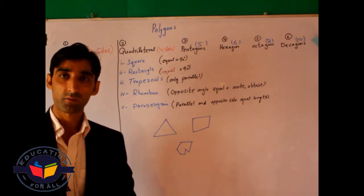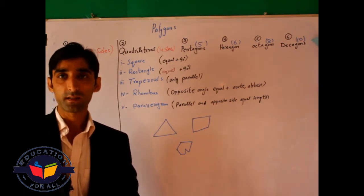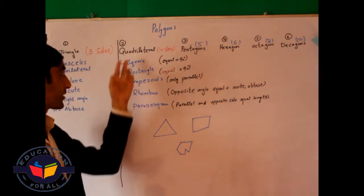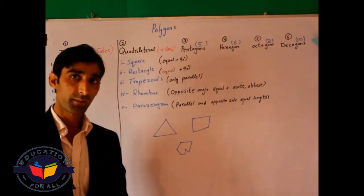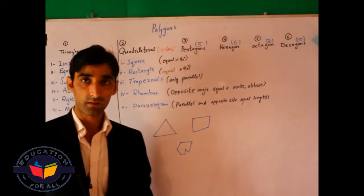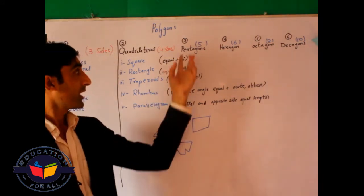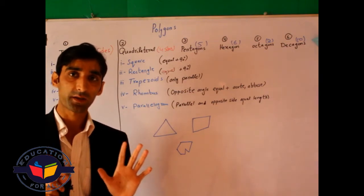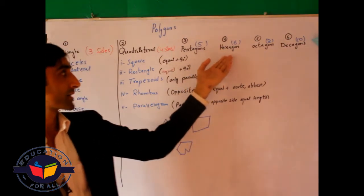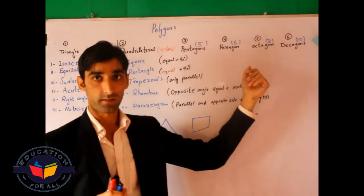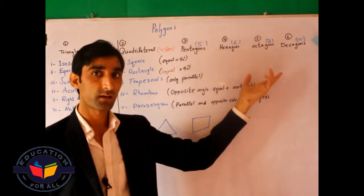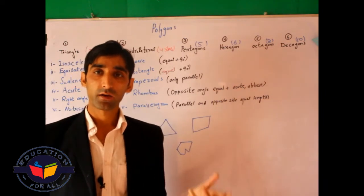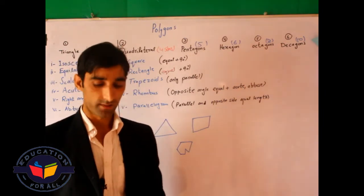What is a quadrilateral? Any closed figure which has four sides is called a quadrilateral. What is a pentagon? Any closed figure which has five sides is called a pentagon. Similarly for hexagon, octagon, and decagon — what is a decagon? Any closed figure which has ten sides is called a decagon.